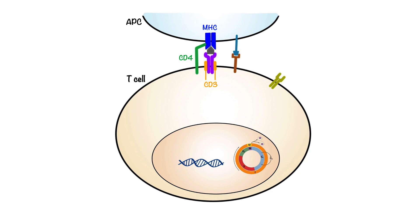However, this initial signal is not sufficient for T cell activation; therefore a secondary signal is required. This secondary signal, also referred to as costimulation, occurs when CD28 receptor expressed on T cells binds CD80 and CD86 molecules that are expressed on antigen-presenting cells, thereby triggering a calcium-mediated signaling cascade.